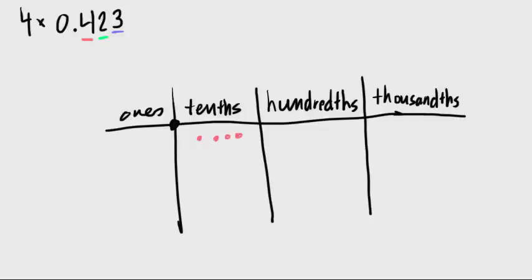That's in the tenth place. All right, so there's four of them. And then I have my two, which is the hundredths. And then I have my three, which is in the thousandths. Now each one's multiplied by four.